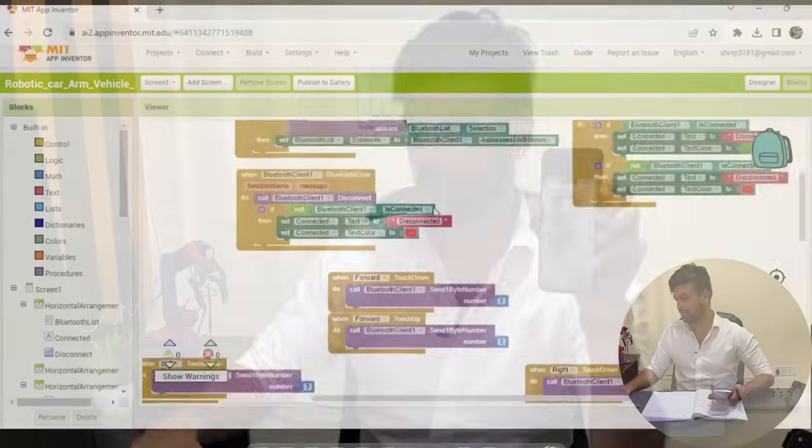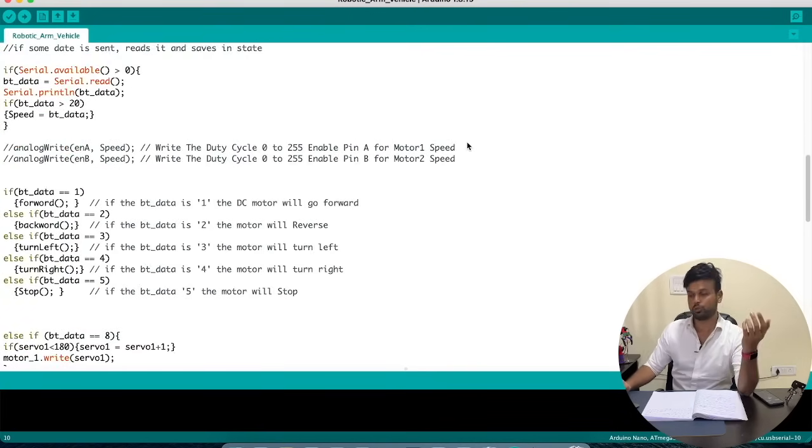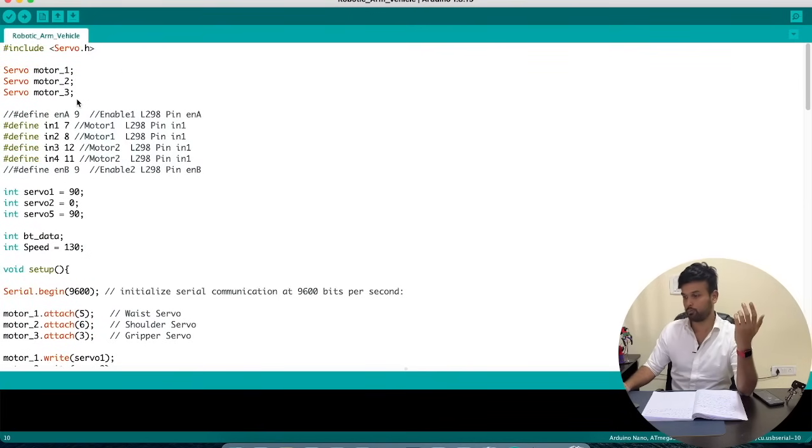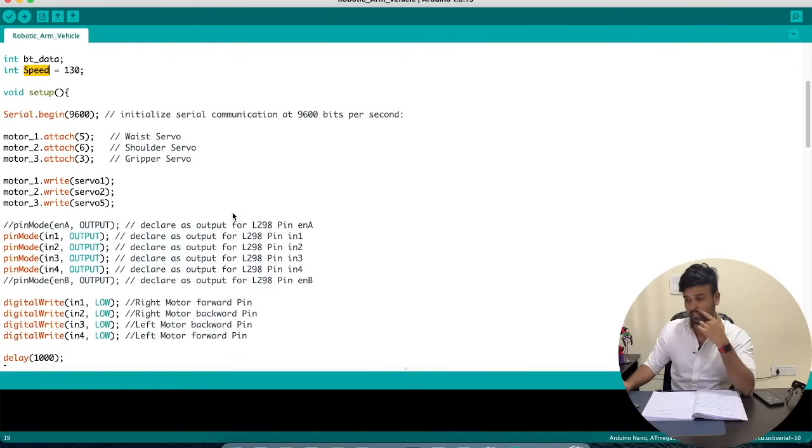Okay, moving on, let's see the Arduino code for our project. So this is the complete Arduino code that we have used for our robot. Let me start from the top. So we have used three servo motors, namely motor one, motor two and motor three. And then we have two DC motors which is controlled by the L298 motor driver. And then we are defining the initial position for our servo motors at 90, 0 and 90 respectively. That being said, we have attached three servos. One is a waist servo for the robotic arm and the next is the shoulder servo and the last one is the gripper servo.